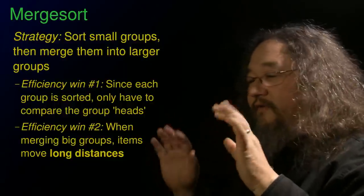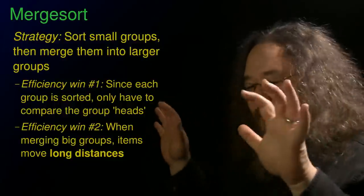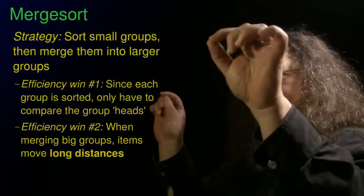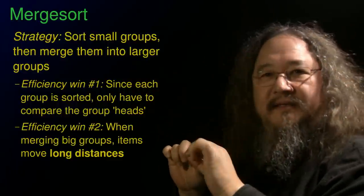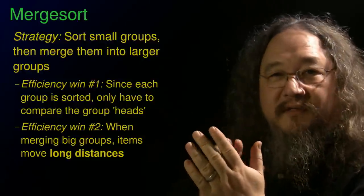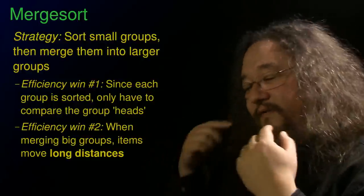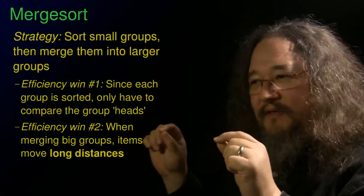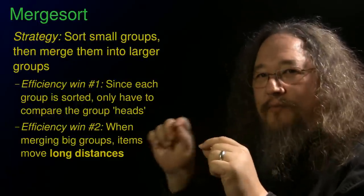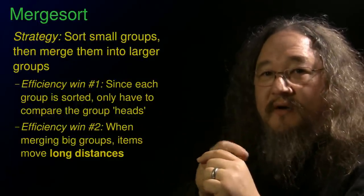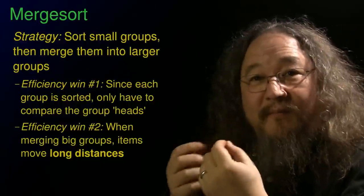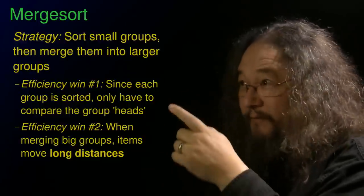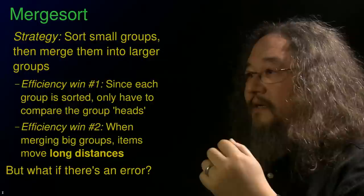The second win is, especially when we're getting to the end of the algorithm, we've got these big groups that we're merging together. When we decide to take this guy and then this guy and then this guy, we're moving those items long distances in the array. So if you think in terms of positional error, like is this guy way out of position? Well, when we make a long swap, we're reducing the positional error a lot. And that's what makes it efficient. All of the efficient sorting algorithms for pairwise comparisons are based on that idea.